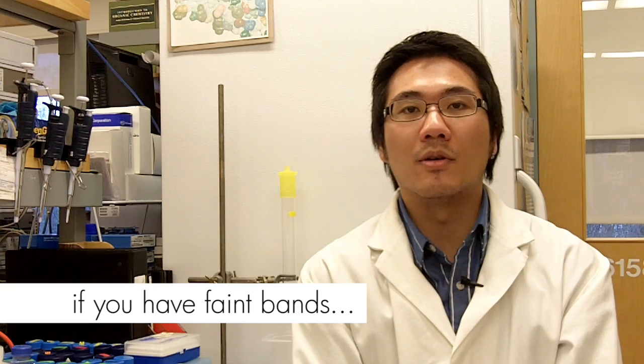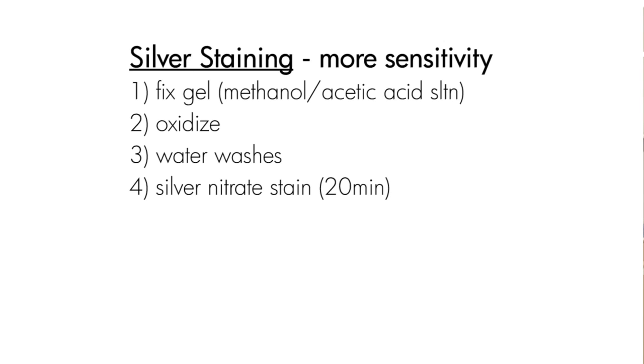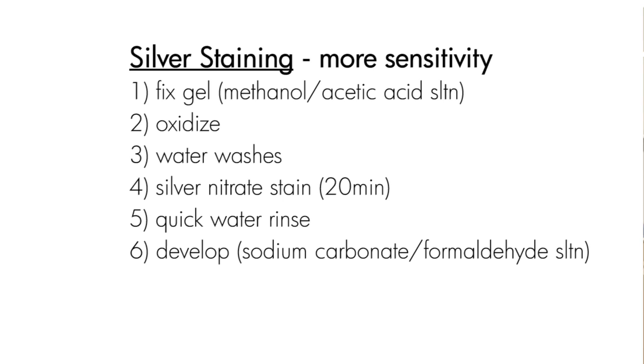If you have faint bands, then you want to use a more sensitive staining protocol which is silver staining. This protocol involves a series of steps. First of all, you need to fix your gel in a methanol acetic acid solution, then you oxidize your gel by putting it into an oxidizing solution. After this step, you want to wash your gel really well several times with water. Then you can stain it with silver nitrate and quickly rinse excess silver nitrate off with water. When you want to develop your gel and try to visualize the band, you put it into a developing solution. You don't want to develop it for too long, so when you want to stop the developing process, you put your gel into an acetic acid solution again. This process does not require using a microwave.